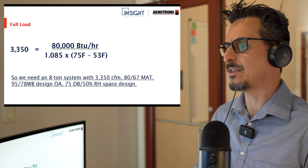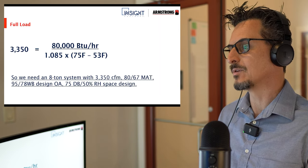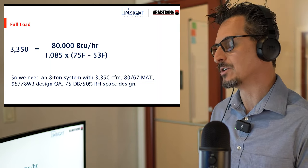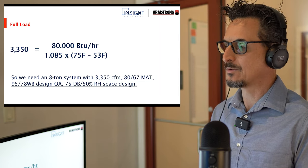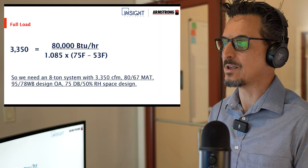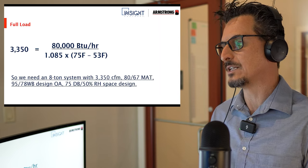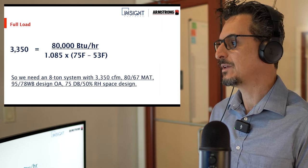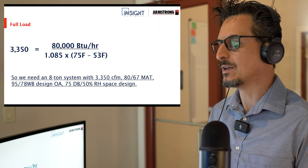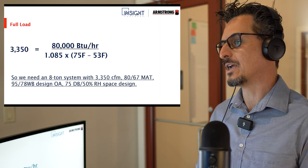At full load we have 80,000 = 1.085 × CFM × (75 − 53). We're going to start with a 53-degree supply temperature, which is where the unit probably should be. That gives us a 3,350 CFM system. So we need an 8-ton system, 3,350 CFM, 80/67 mixed air temperature, 95/78 wet bulb for the design outdoor condition — a nice steamy, sweltery day — and a 75°F dry bulb, 50% RH space condition.